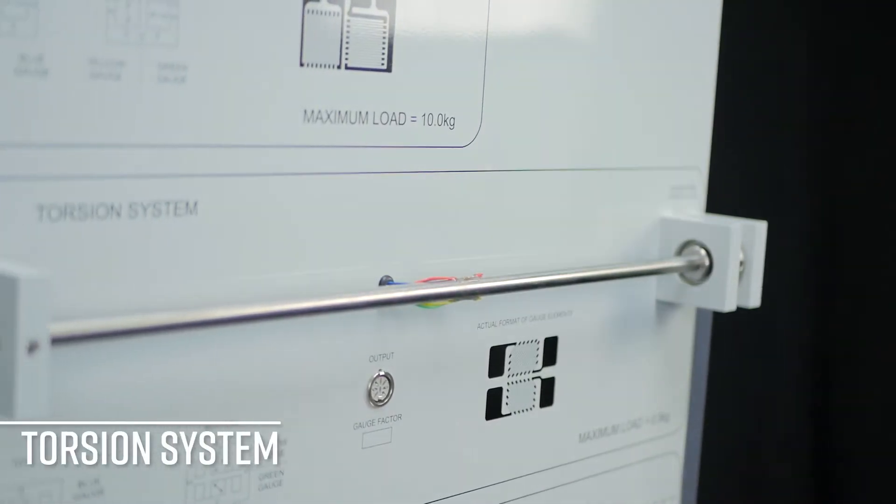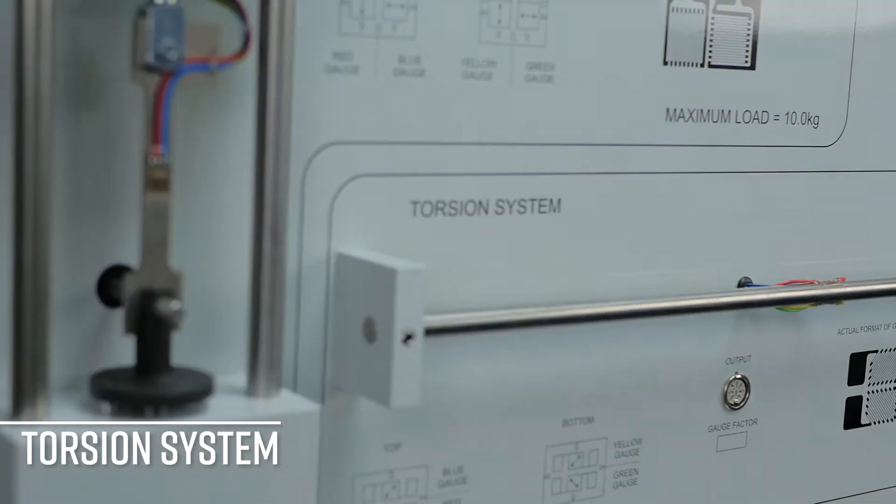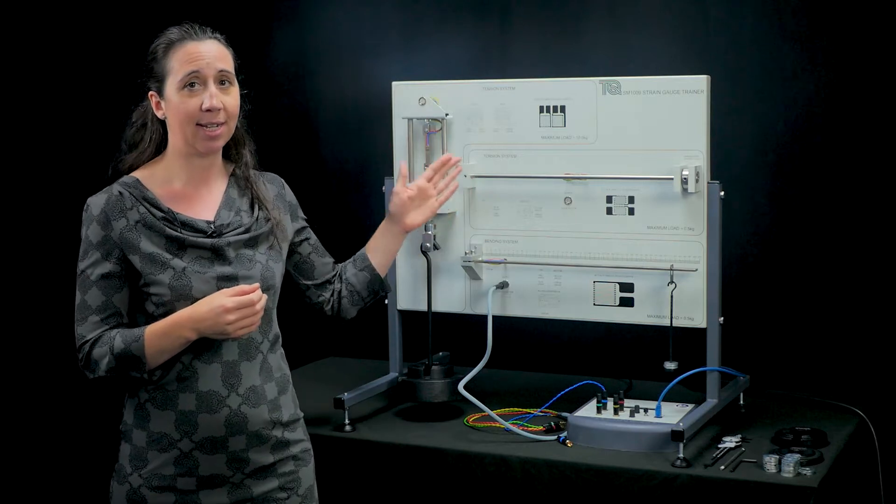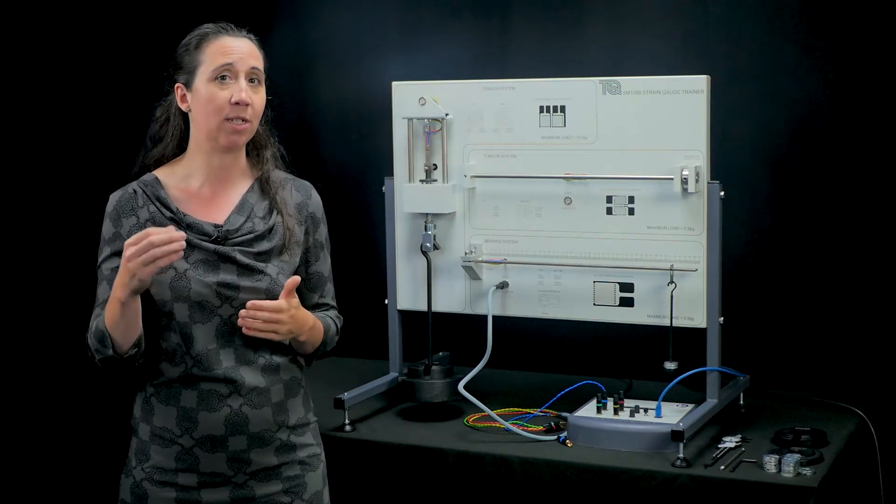Over to the torsion system for looking at twisting, i.e. torsional shear strain on the surface. The setup we have here is similar to the torsion bar used in suspension cars.